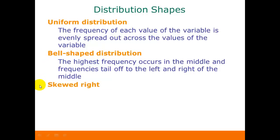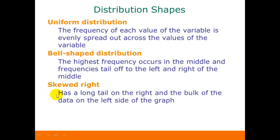Now if our distribution is skewed right, that means that we have a long tail on the right and the bulk of the data on the left side of the graph. And this gets a little confusing. You have to remember that a long tail on the right means skewed right.